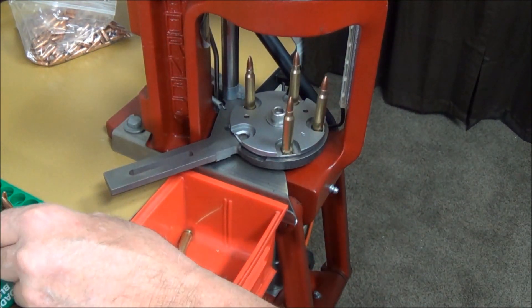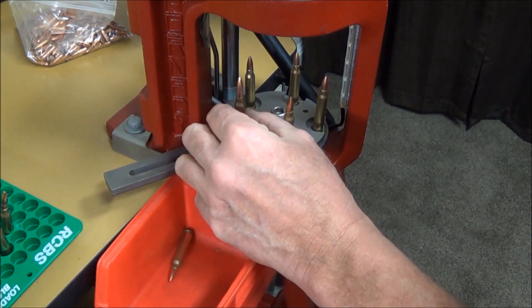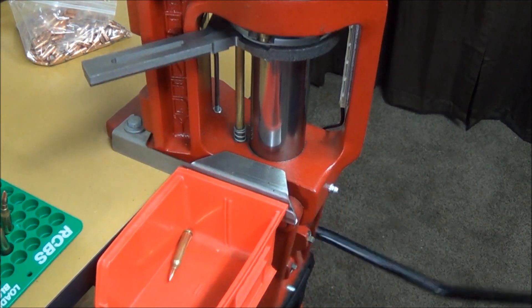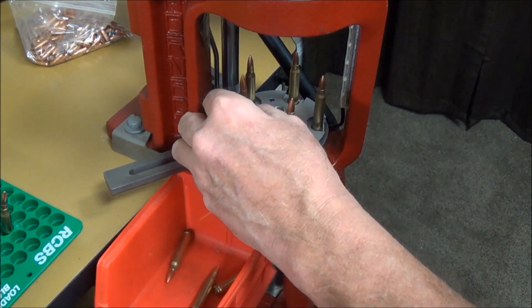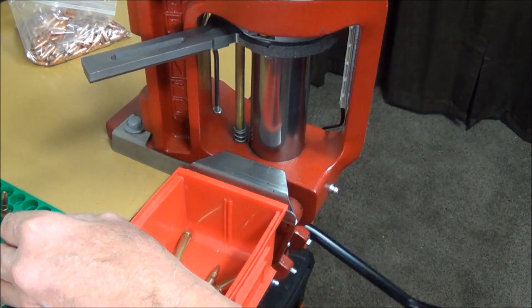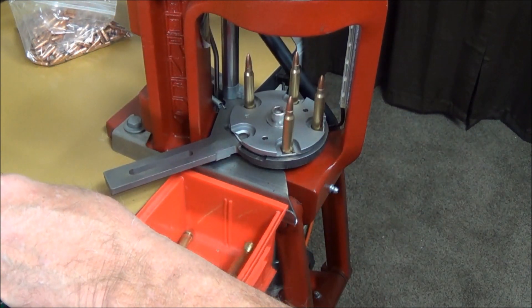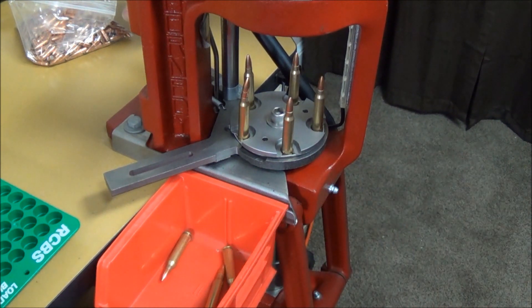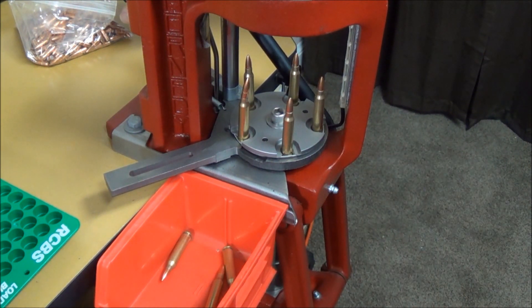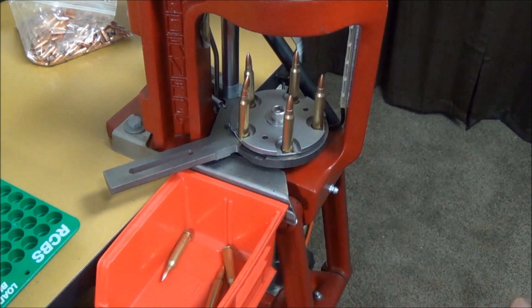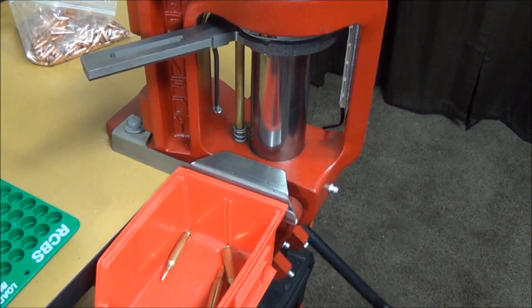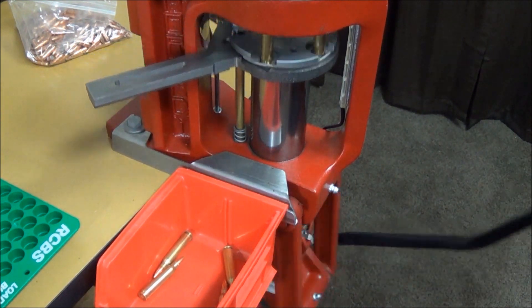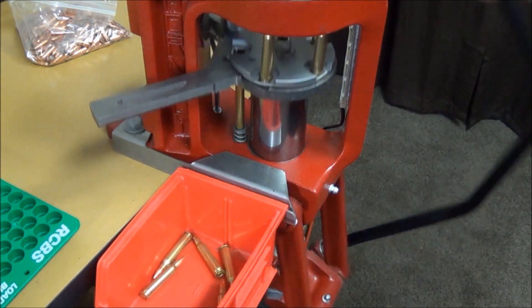In this particular case, I like doing it this way. We'll do just a couple more here. Now my particular die has got a deal on it where basically it will align the bullet as it goes up in, so I don't have to really worry too much about it because it will seat the bullet exactly where it needs to go. And that will give you some idea.